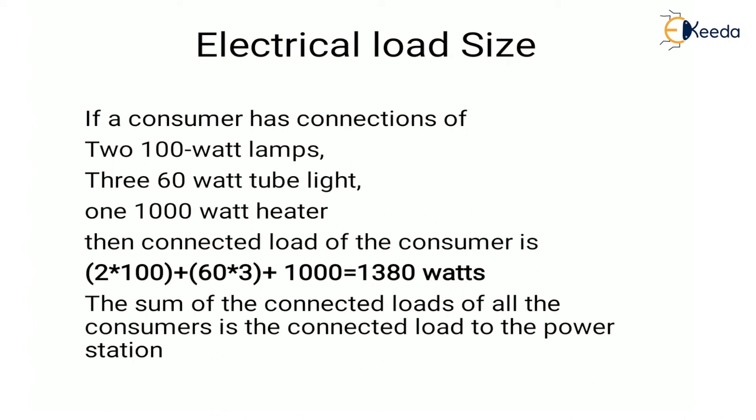The sum of the connected load of all the consumers is the connected load to the power station. Now if we have to find out the energy consumption of appliances, we must know how much the appliance worked. It will depend upon the power in watts multiplied by the duration of its use in hours. The common unit of electricity is KWH, that is kilowatt hours.